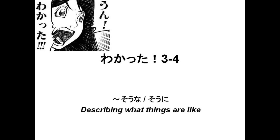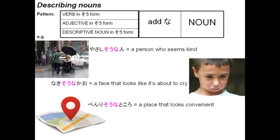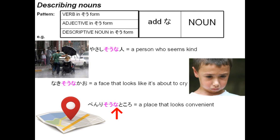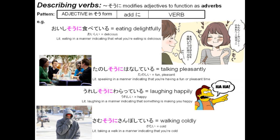3-4: so na or so ni — describing what things are like. To describe nouns, we take any word in its so form, add na, then add a noun. For example: yasashisouna hito — a person who seems kind; nakisouna kao — a face that looks like it's about to cry; benrisouna tokoro — a place that looks convenient. For describing verbs, so ni modifies adjectives to function as adverbs. The pattern is to take an adjective in its so form, add ni, then put the verb after it. For example: oishisouni tabeteiru — eating delightfully; tanoshisouni hanashiteiru — talking pleasantly; ureshisouni waratteiru — laughing happily.